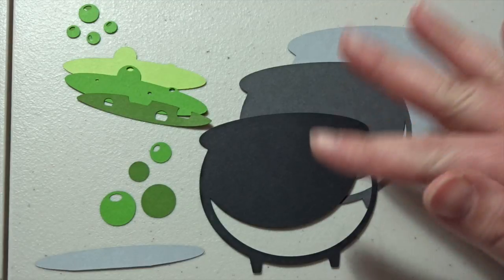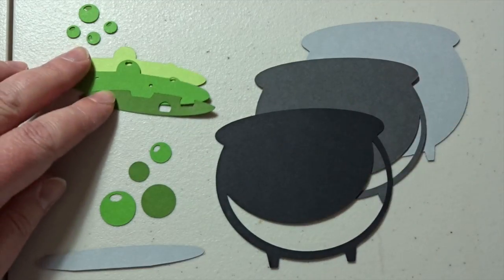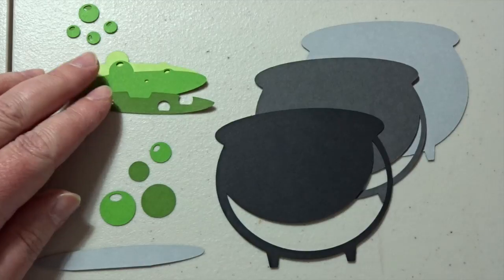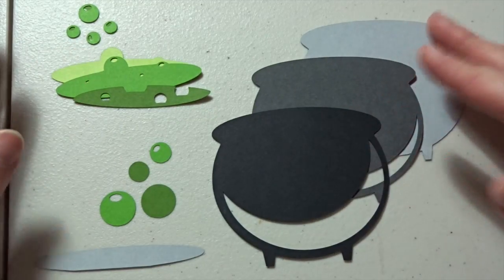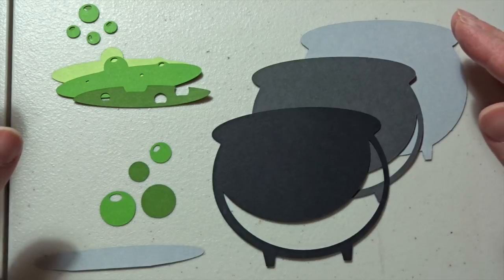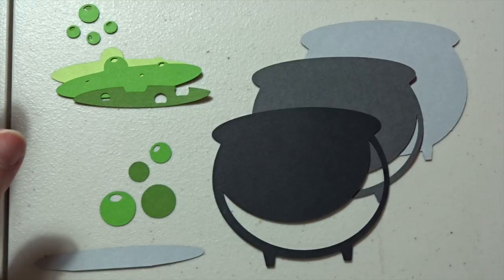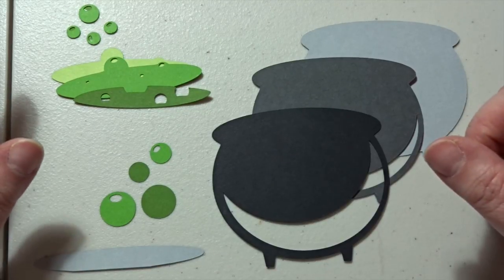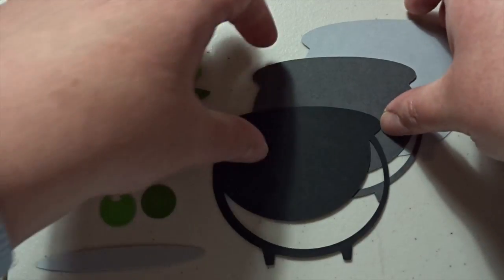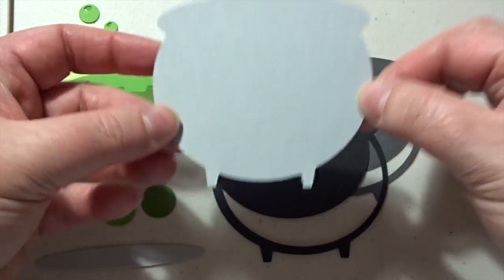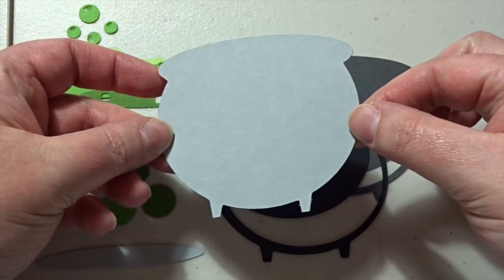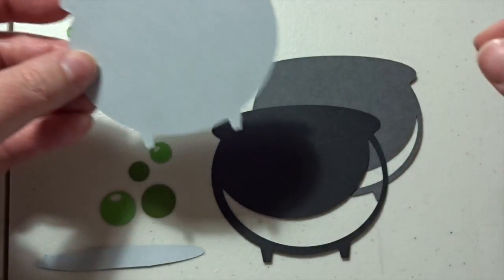So again, when you get these cut files, you're going to get a picture of what the finished item looks like, as well as an assembly instruction sheet. So I've got the finished picture pulled up on my computer for my guide. And I'm going to go ahead and use that. This is the lightest gray. And this is the piece that I'm going to go ahead and start with.